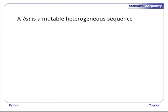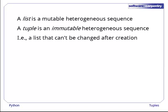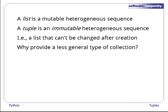As we saw a few episodes ago, a list is a mutable sequence of values which can be of any type. A tuple is simply an immutable sequence of heterogeneous values, i.e., a list whose entries cannot be changed after its creation. At first or even second glance, it may seem strange to have tuples in the language. Why provide a less general kind of collection?